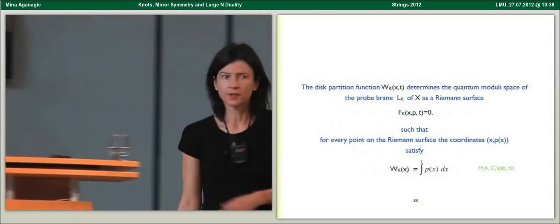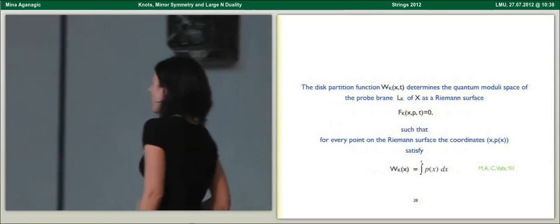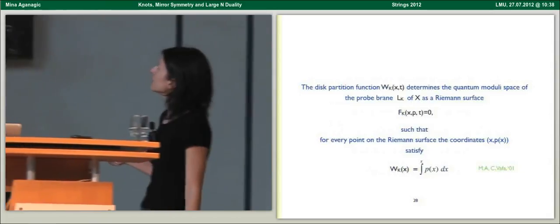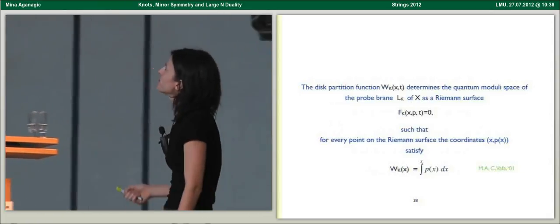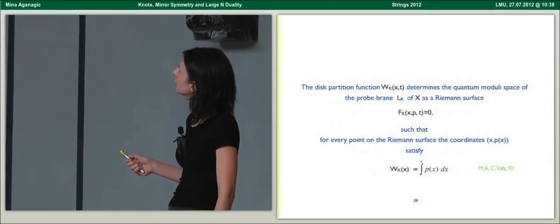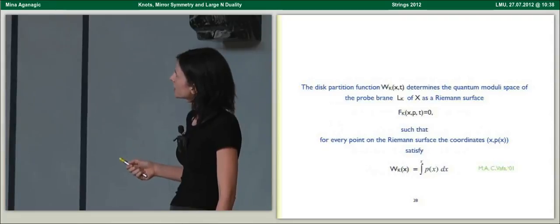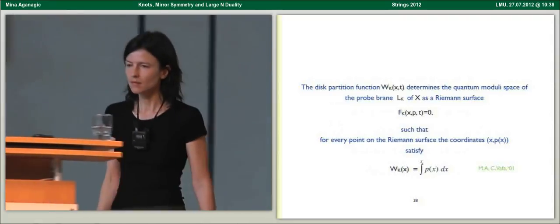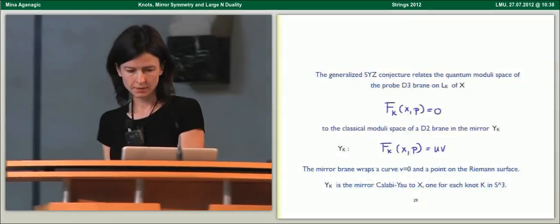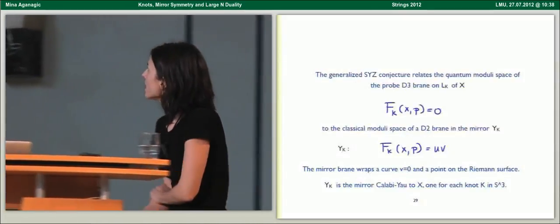The disk partition function determines the quantum moduli space of the probe brane as a Riemann surface, such that for every point on the Riemann surface with coordinates X and P, these are related to the disk partition function in this way. This is known since 2001.